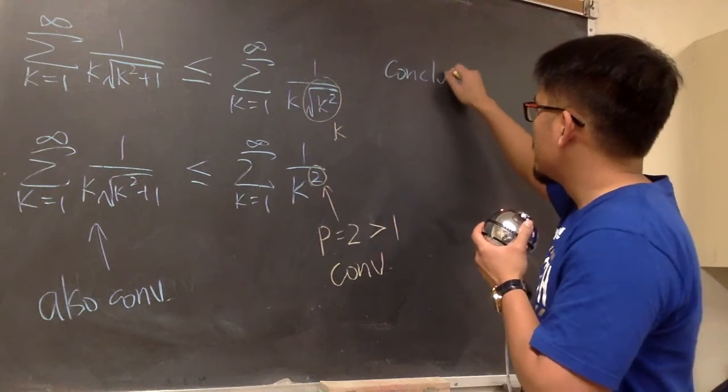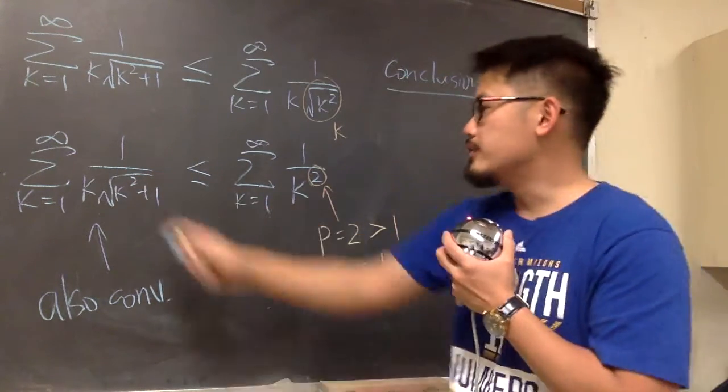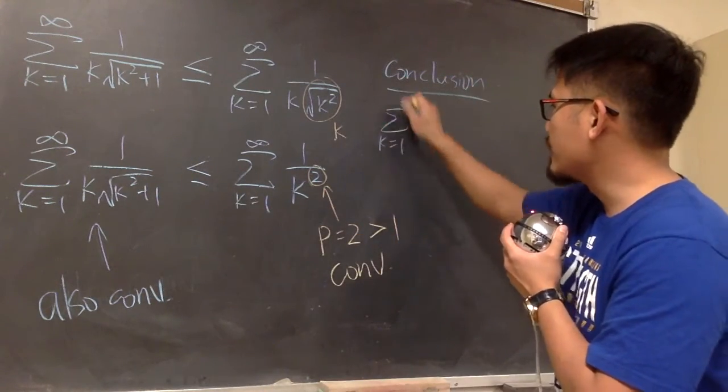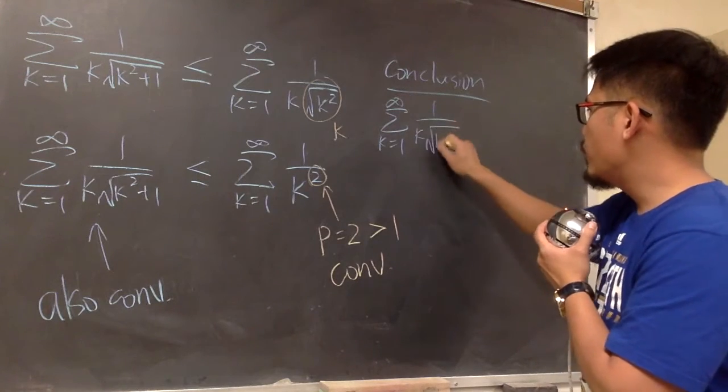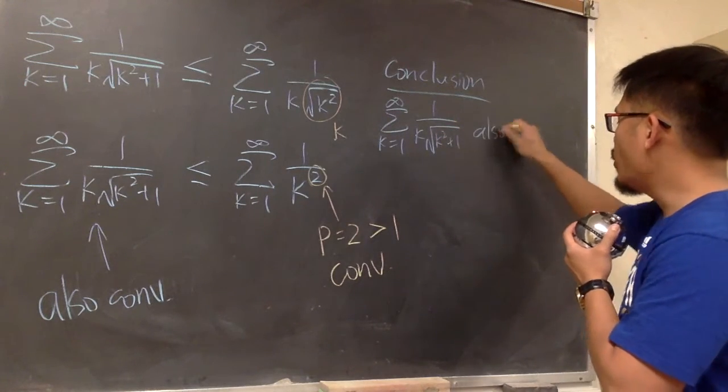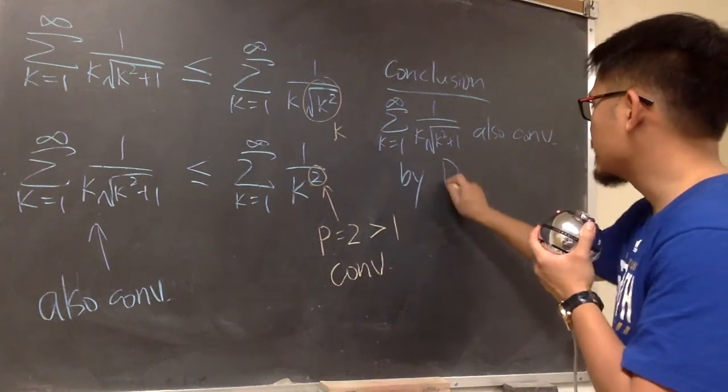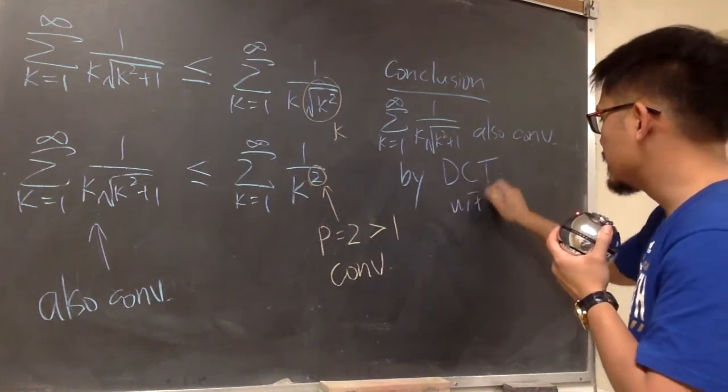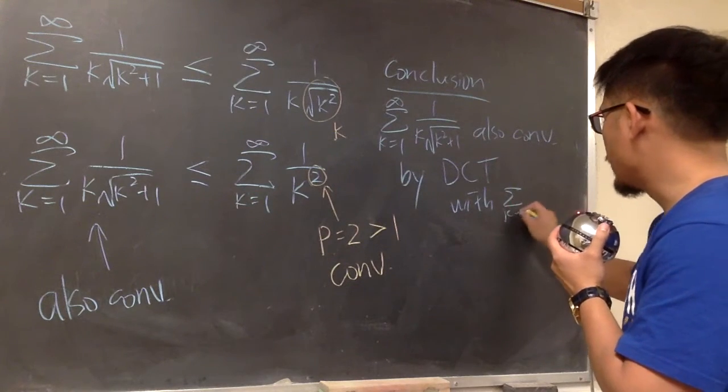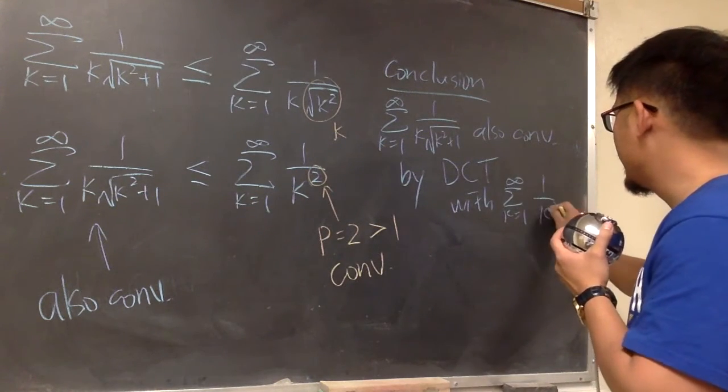Here we can write down the conclusion. And I'm just going to tell you the original, which is sigma when k goes from 1 to infinity, 1 over k, square root of k squared plus 1, this right here, also converges by, we have this inequality, so that is the direct comparison test, with sigma when k goes from 1 to infinity, 1 over k squared.